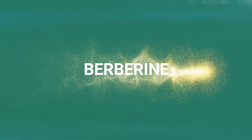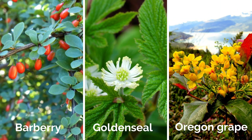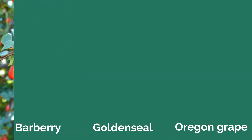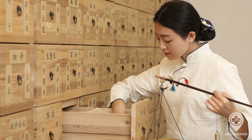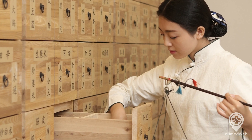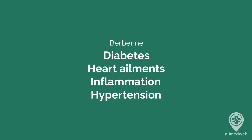Today's highlight is berberine. This naturally occurring compound is present in a range of plants such as barberry, goldenseal, and Oregon grape. It's a well-esteemed element in traditional Chinese and Ayurvedic medicinal practices, known for managing conditions like diabetes, heart ailments, and inflammation.